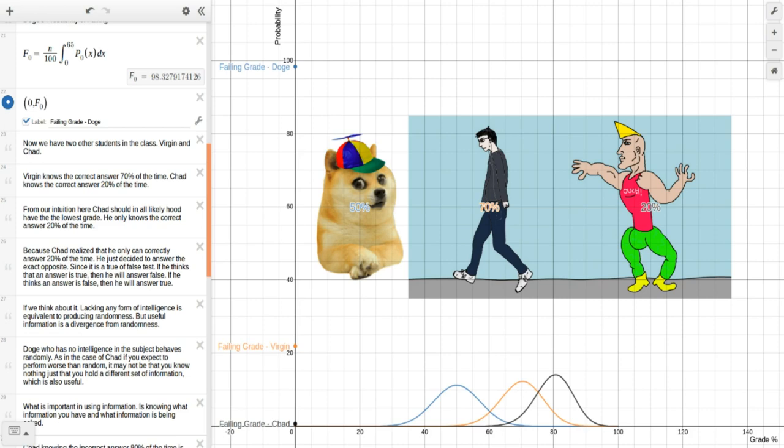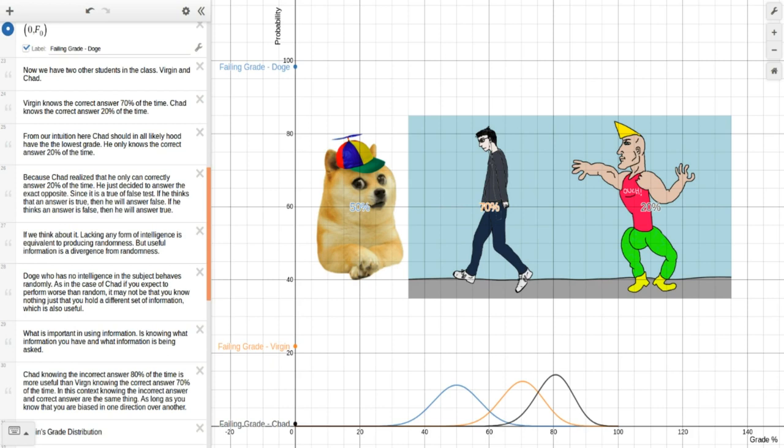If we think about it, lacking any form of intelligence is equivalent to producing randomness. But useful information is a divergence from randomness. Doge, who has no intelligence in the subject, behaves randomly. As in the case of Chad, if you expect to perform worse than random, it may not be that you know nothing, just that you hold a different set of information, which is also useful.